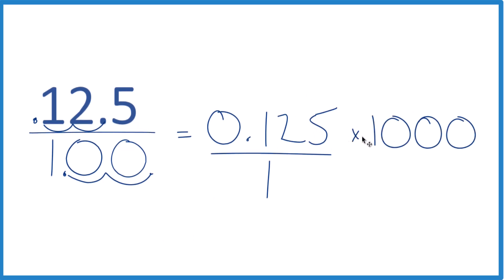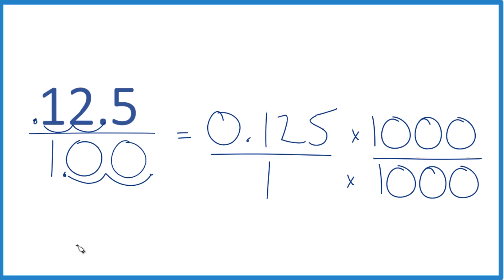We can't just multiply the numerator by 1000. We also need to multiply the denominator by 1000, because 1000 over 1000 equals 1. So we're going to change the way it's written, but we're not going to change the value.